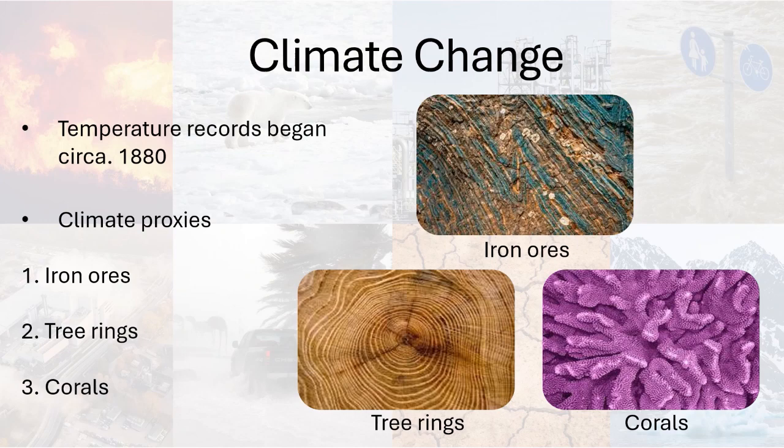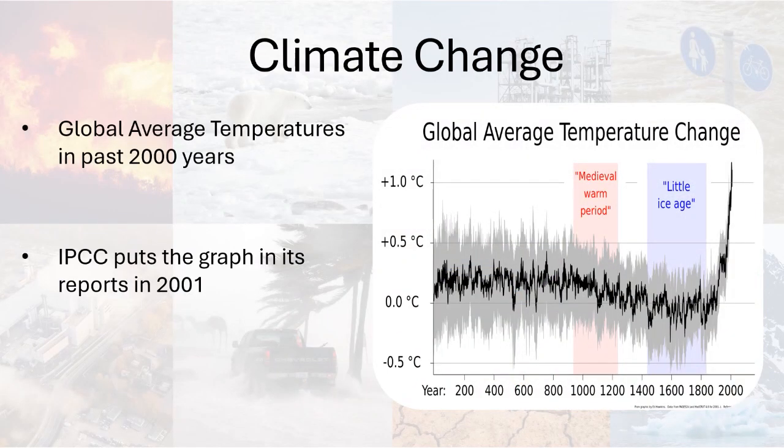Later, the same team of scientists produced data of the past 2,000 years using the same proxy technique. The Intergovernmental Panel on Climate Change, known as IPCC, put the hockey stick graph in the summary of its 2001 assessment report. There have been multiple debates in the past two decades about this graph.